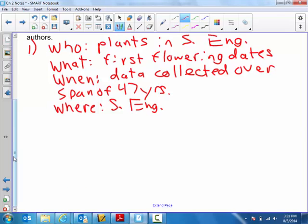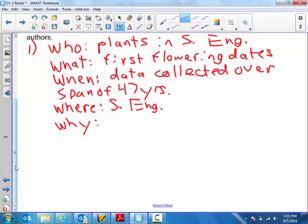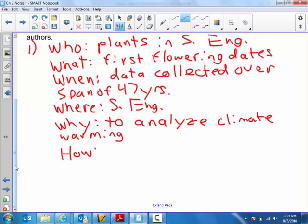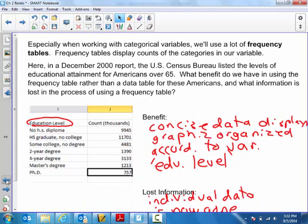Where was the data collected? We've already answered that one - southern England. Why was the data collected? That was told to us in the last sentence - an indication of climate warming according to the authors. To analyze climate warming. How was the data collected? I don't think we have enough info - not enough info.